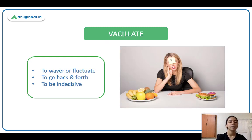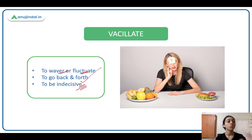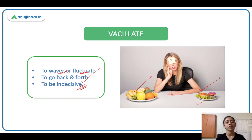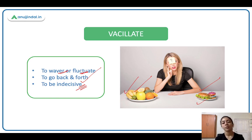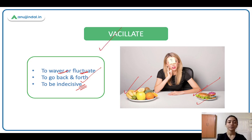And the last word is vacillate. Vacillate ka matlab hai to waver and fluctuate — you're unsure, you're unable to make a decision, indecisive, to go back and forth. Do-teen cheezon mein aap aage peeche ho rahe ho — haan, na, haan, na. Jaisi she's confused ki fruits khaaun ya burger khaaun. She decides burger khaaun, but then thinks nahi yeh toh unhealthy hai, maybe I should eat fruits — lekin phir se burger ka man ho raha hai. So she's vacillating between the two choices, going back and forth.